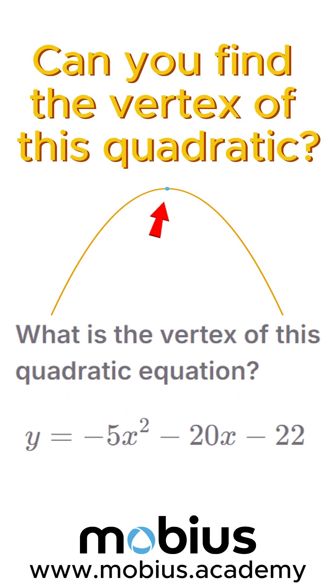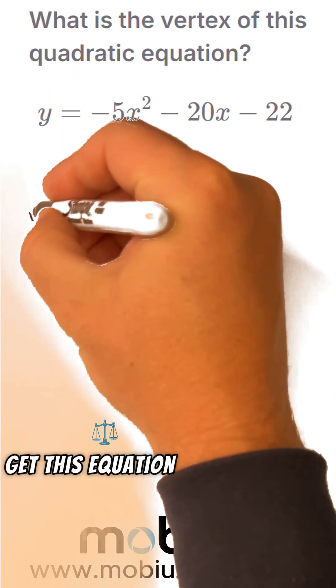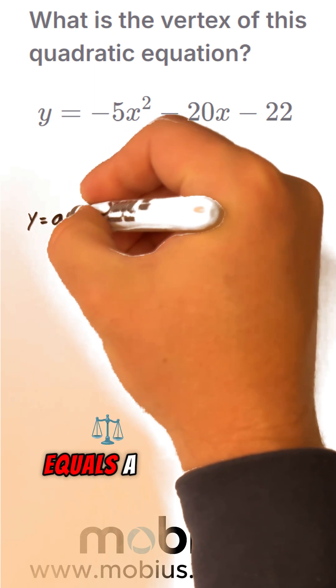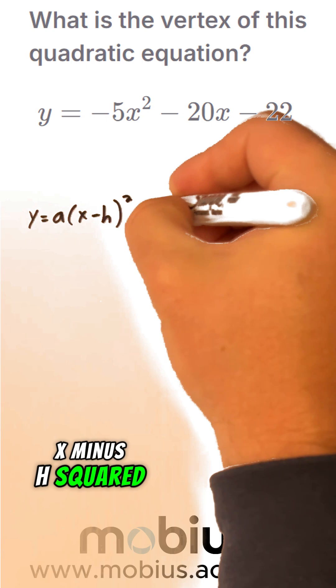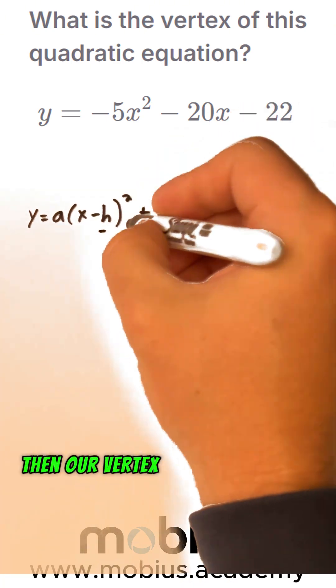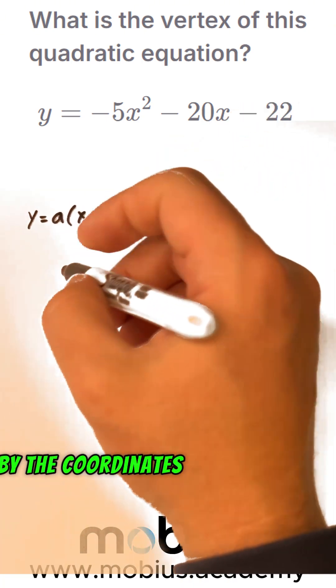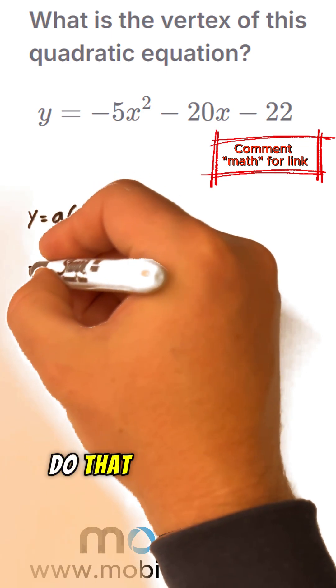Can you find the vertex of this quadratic equation? If we can get this equation into the form y equals a(x minus h) squared plus k, then our vertex will be given by the coordinates h and k. So let's see if we can do that.